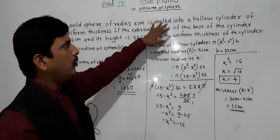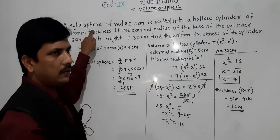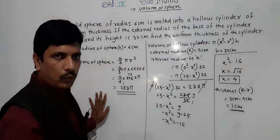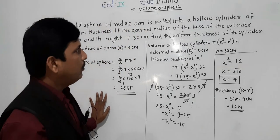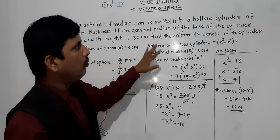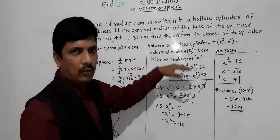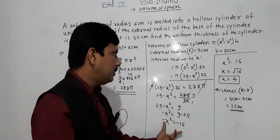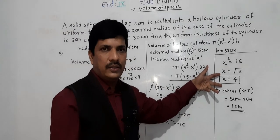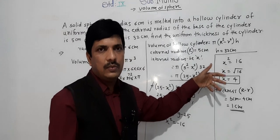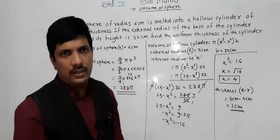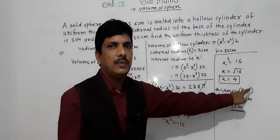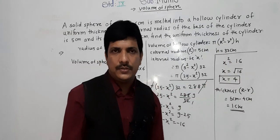So what we did: the sphere was melted, so first we found the volume of the sphere. It was converted into a hollow cylinder. Height and external radius were given, and with those we found the internal radius. Once we have the internal radius, we find thickness as external radius minus internal radius.